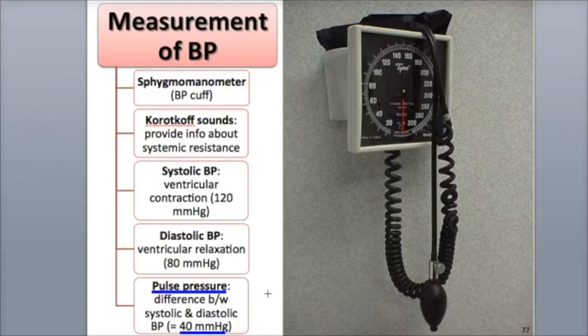Systolic pressure is normally three times the pulse pressure, while diastolic pressure is normally two times the pulse pressure. This relationship can be expressed as a ratio of 3 to 2 to 1.